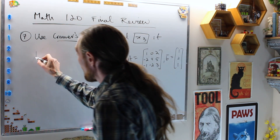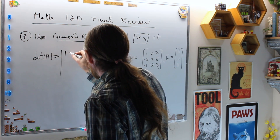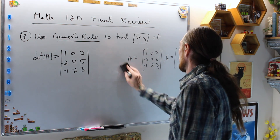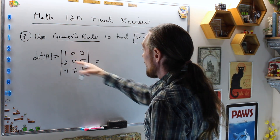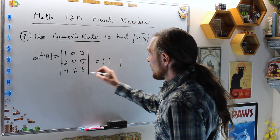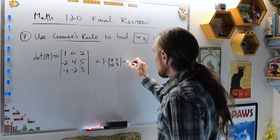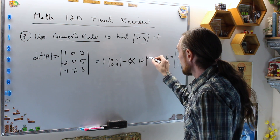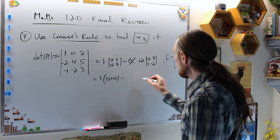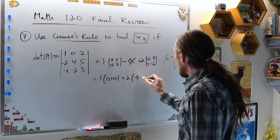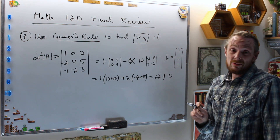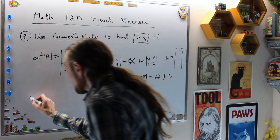det(A) = det([1, 0, 2; −2, 4, 5; −1, −2, 3]). Cofactor expanding along the top row: 1·det([4, 5; −2, 3]) − 0 + 2·det([−2, 4; −1, −2]). That's 1·(12 + 10) + 2·(4 + 4 − ... ) = 1·(22) + 2·(0) — wait, specifically: 22 + 2·(−4 + 4) = 22. det(A) = 22, which is not zero, so we can continue.